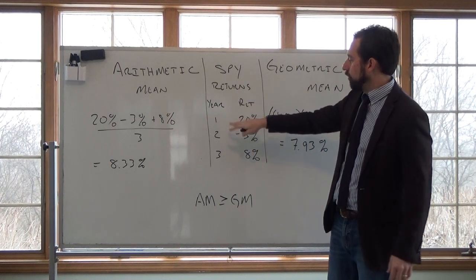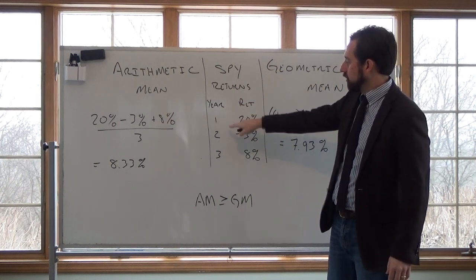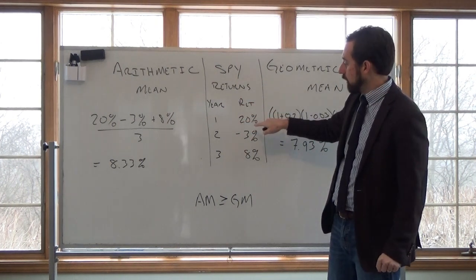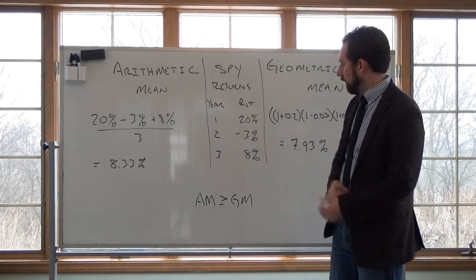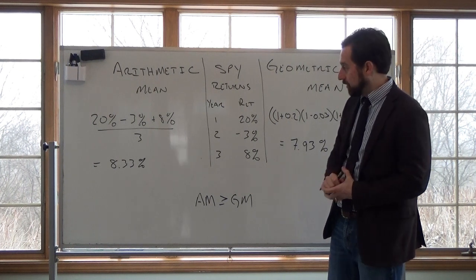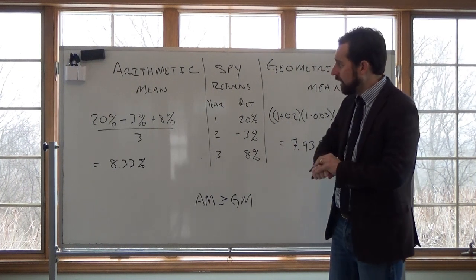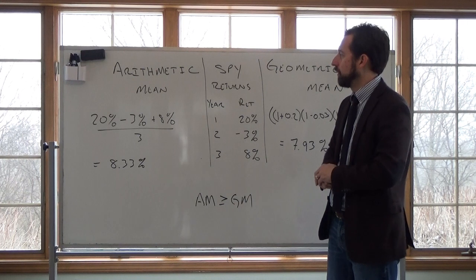So let's say in three years we have the first year the stock market returned 20%. The following year it went down by 3%. And then the third year it went up by 8%.